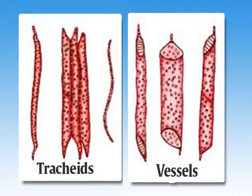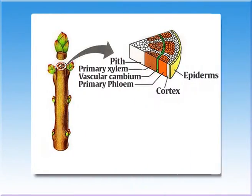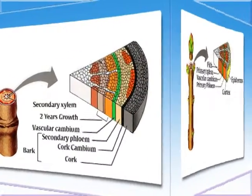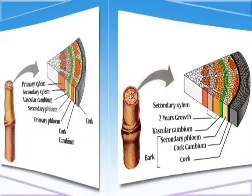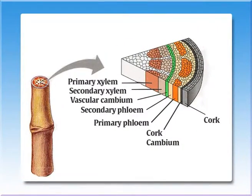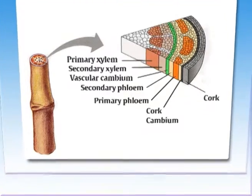Among the four xylem elements, tracheids and vessels form a kind of continuous tubular system running from the root system to aerial branches. The end-to-end association of tracheary elements with their disintegrated walls provides a tubular network of channels for the movement of water. In smaller plants, xylem constitutes the longest part of the pathway of water transport — about 95.5% or even more — and in tall trees the specialized anatomy of xylem enables greater efficiency of water transport.